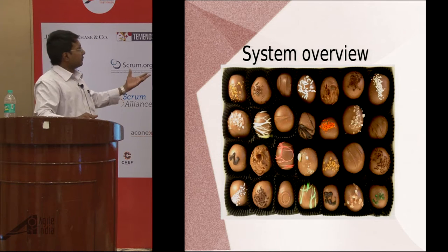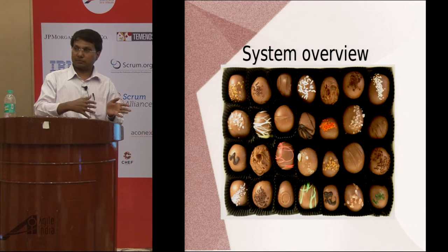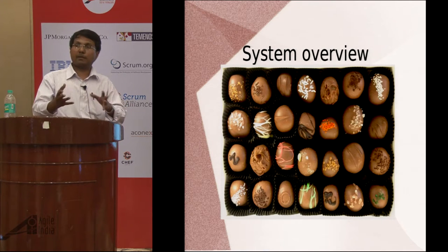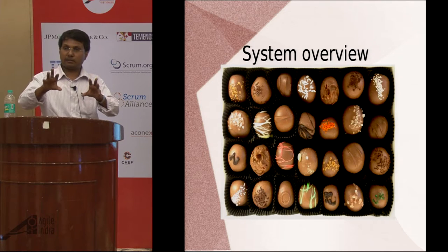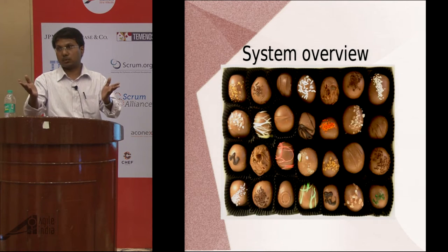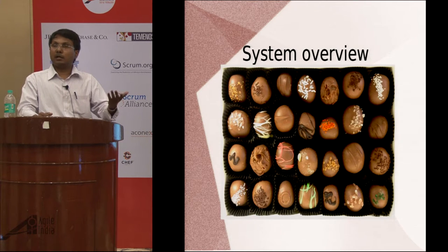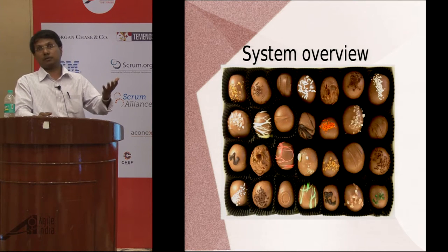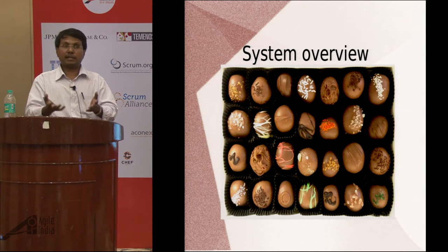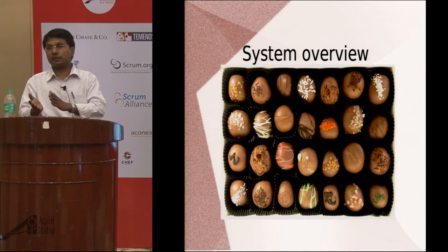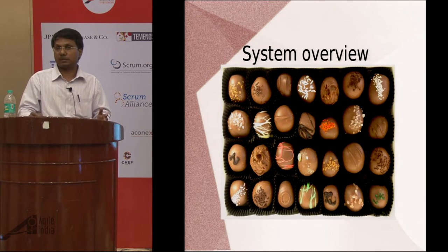In the real-life case study, the organization initially had about 100 people who went into the transformation first. They formed a tribe and were split into separate squads with squad leads. There were a lot of organizational changes. Before the transformation, software was not getting ready and was getting delayed. After the changes, the availability of new features improved significantly, which was a big advantage.